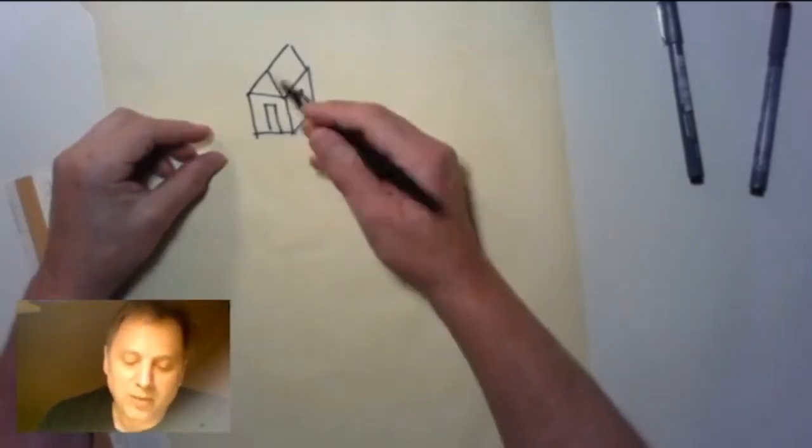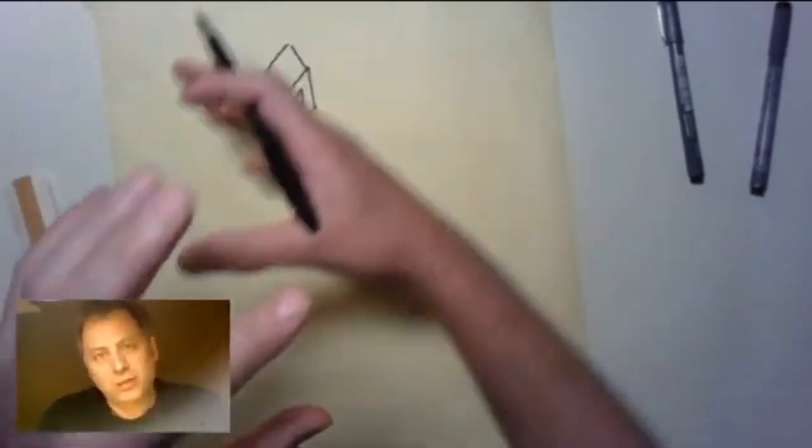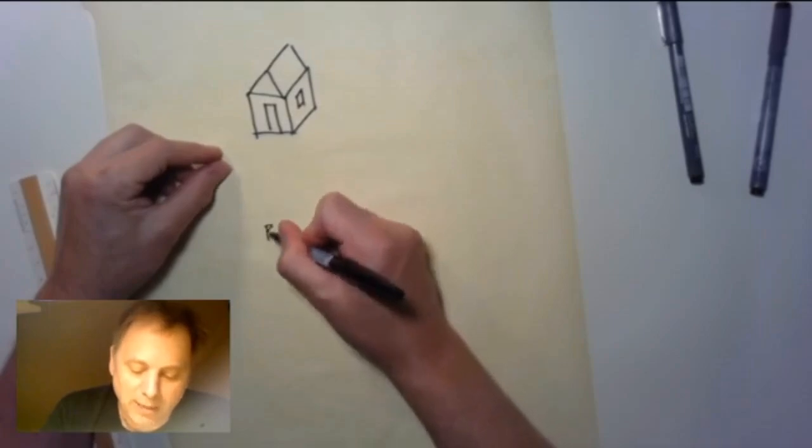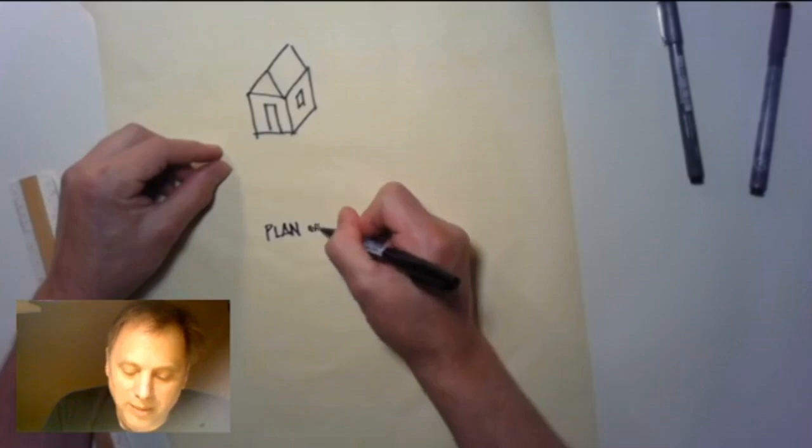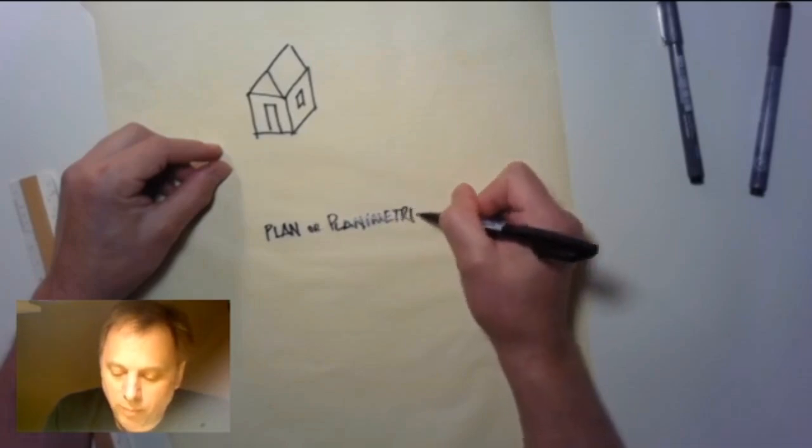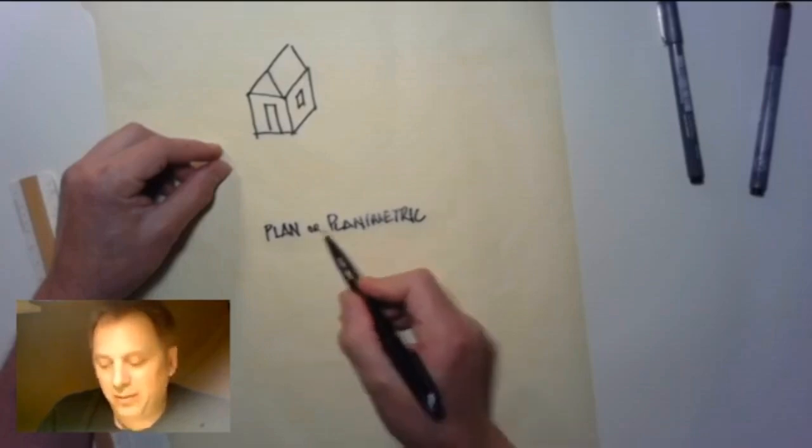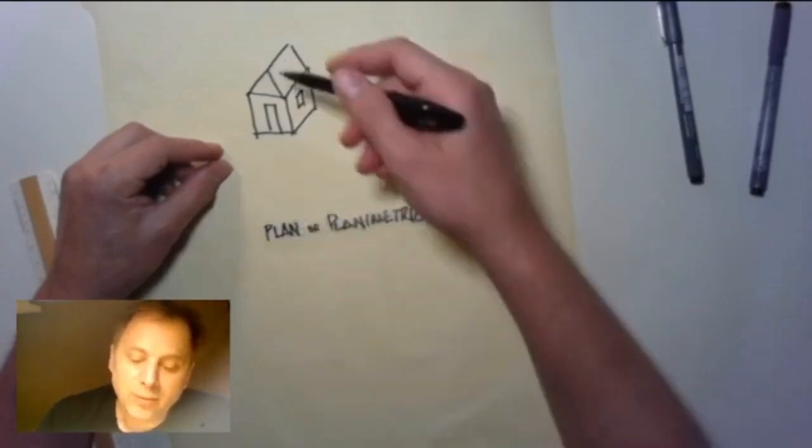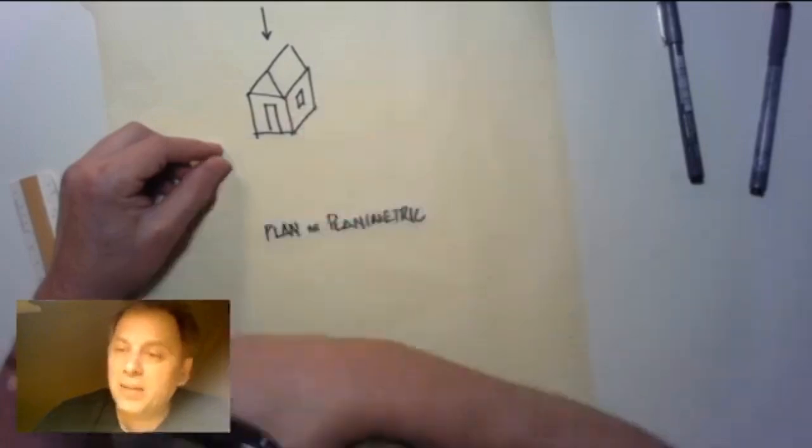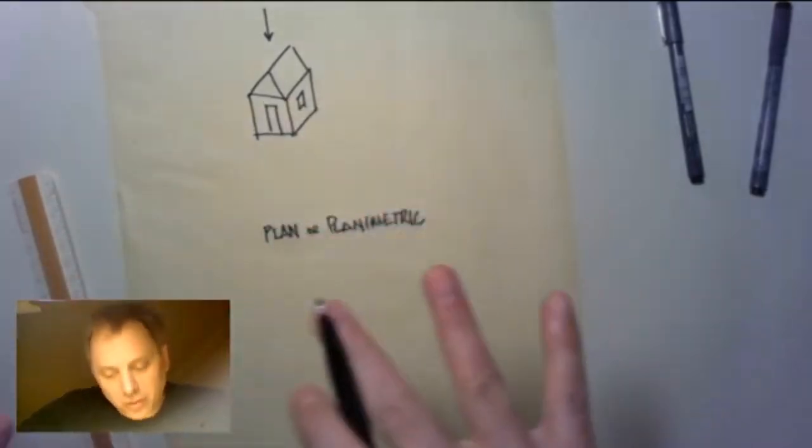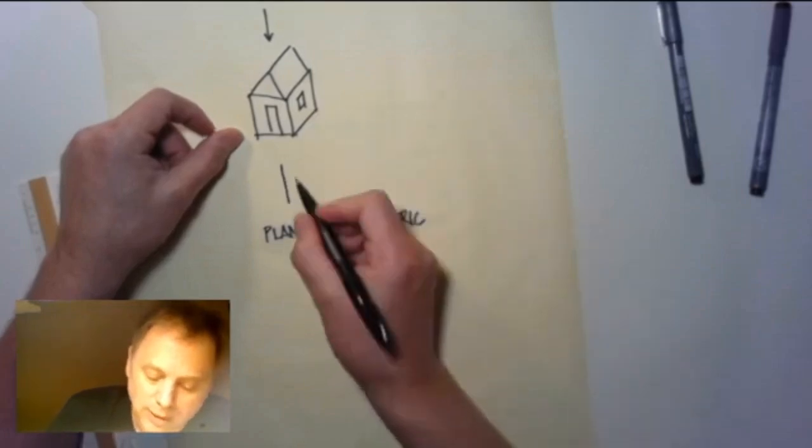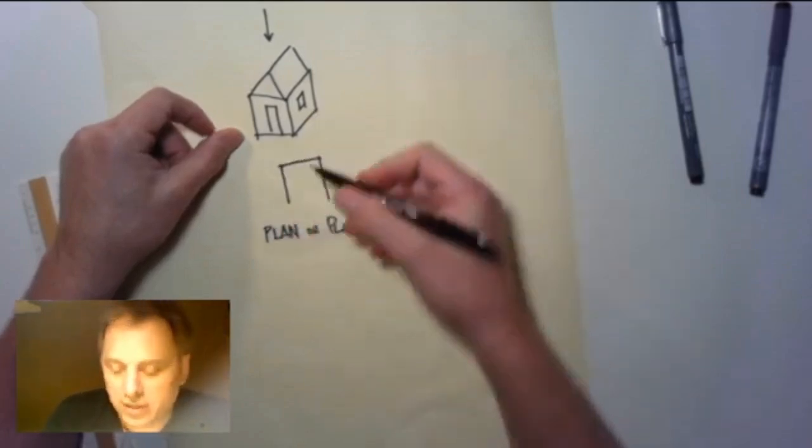When we talk about plan or planimetric drawing—plan is the noun, planimetric the adjective—what we're doing is we are looking down on the building and imagining that the roof is not there, so that we can see the rooms inside. So the planimetric drawing of that little house, you'd start by drawing the geometry just like I talked about in class.